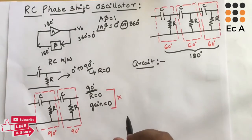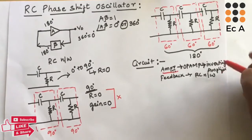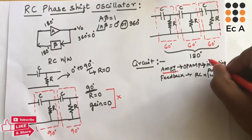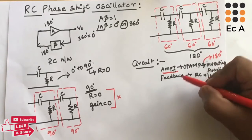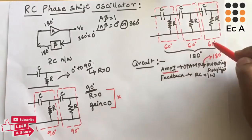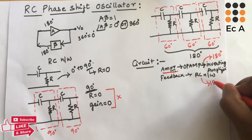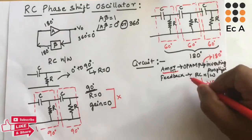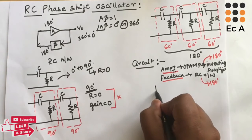Let us write the circuit for the RC phase shift oscillator. At the amplifier stage we can use an op-amp as an inverting amplifier, which provides 180 degree phase shift. In the feedback we use 3 RC phase shift networks that provide 180 degree phase shift, so the overall phase shift of the circuit will be 360 degrees.